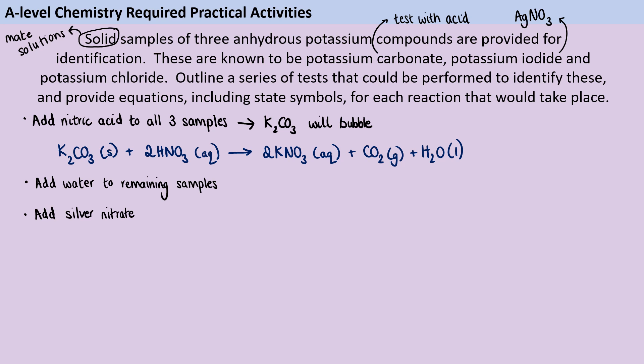Now of course, typically before we add silver nitrate, we would add some nitric acid to remove any leftover carbonates or sulfates that might give us a false positive. But since we've already added some nitric acid as part of the first test, we don't need to now add more.